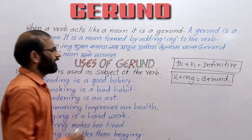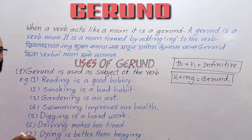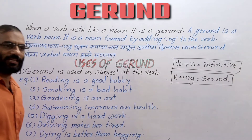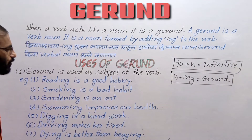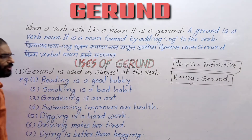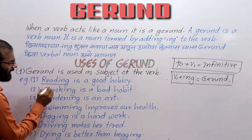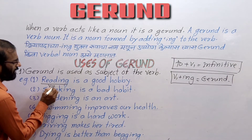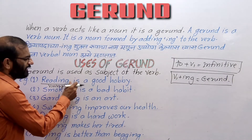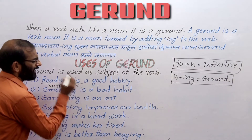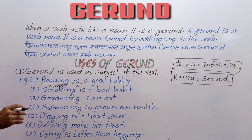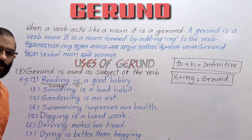We are going to learn the uses of gerund. The first use of gerund is that gerund is used as subject of the verb. For example: 'Reading is a good hobby.' Here, reading is V1 plus ING. After this we have the verb 'is,' which is the main verb. So 'reading' is acting before the main verb — that means it is the subject.